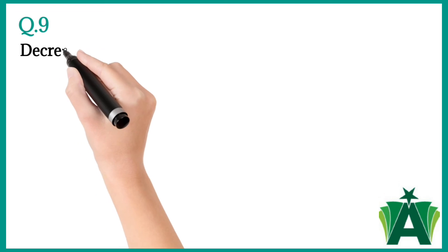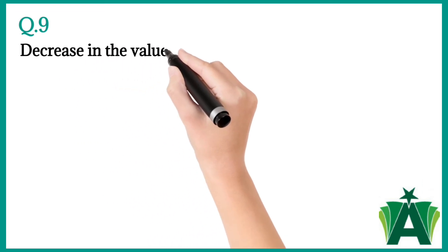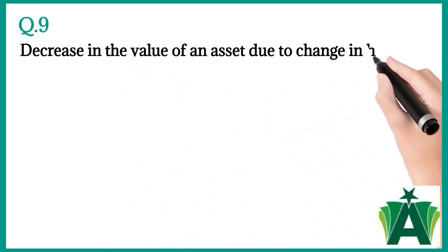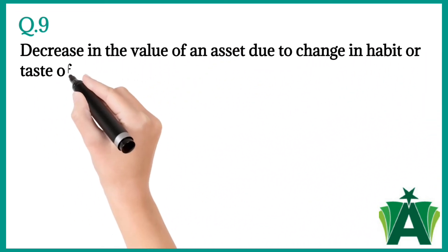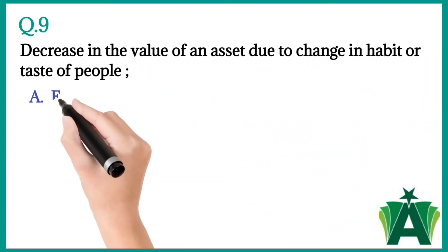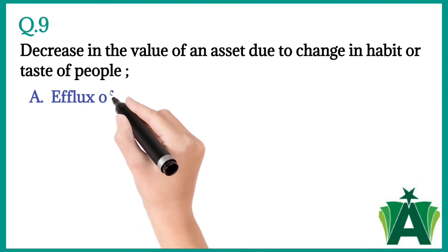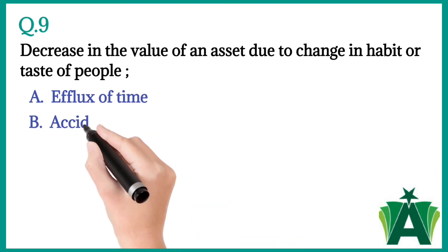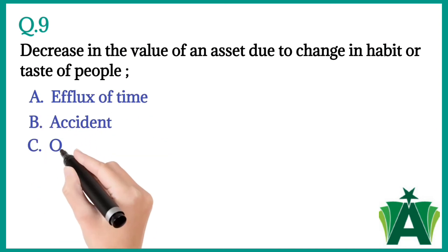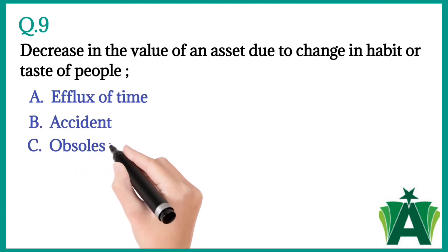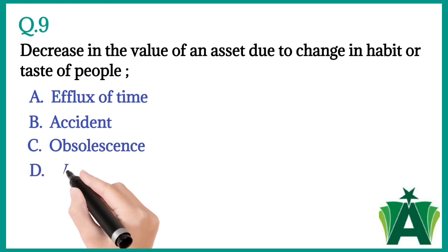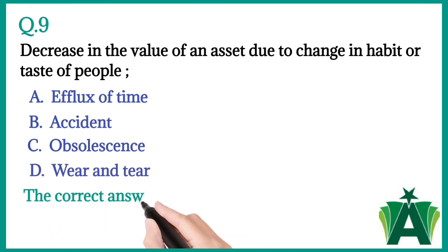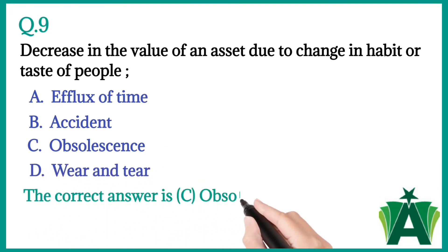Question number nine: Decrease in the value of an asset due to change in habit or taste of people — a) effluxation, b) accident, c) obsolescence, d) wear and tear. The correct answer is c) obsolescence.